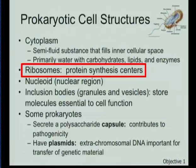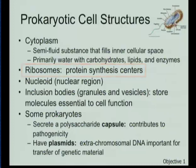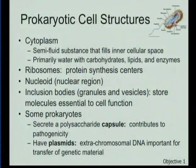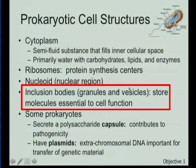Bacteria also have ribosomes, just as eukaryotic organisms do, to allow protein synthesis. Because they don't have a true nucleus, they have a nuclear region and one large chromosome that is continually dividing. Unlike human cells, which go through mitosis with an S phase for DNA replication, bacterial organisms are constantly growing at a given rate — some faster, some slower — which contributes to how they cause disease. They also have inclusion bodies: large granules and vesicles used to store molecules essential to their function, such as carbohydrates and lipids.